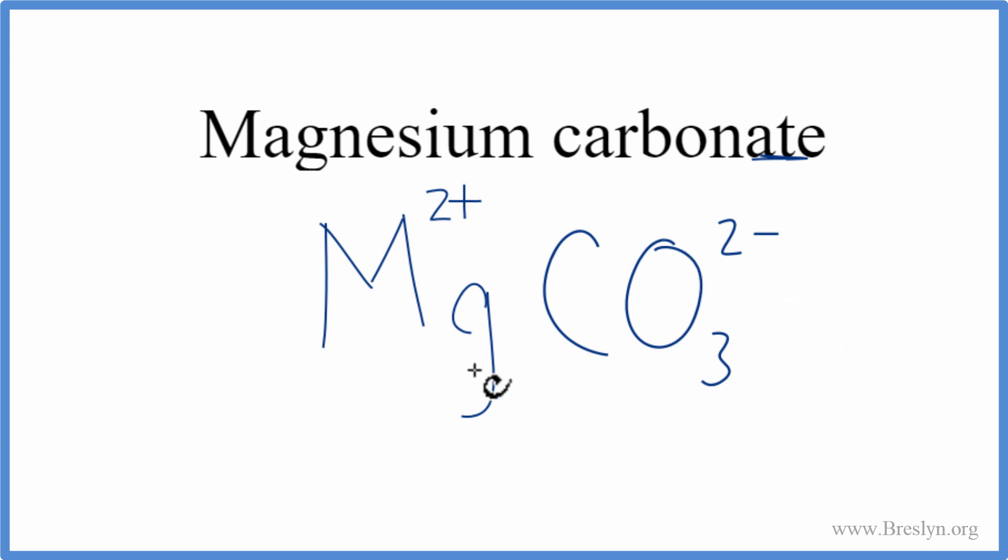So these need to add up to 0, have a net charge of 0, because magnesium carbonate is a neutral compound. Now, 2-plus and 2-minus, they add up to 0, so this is the formula for magnesium carbonate.